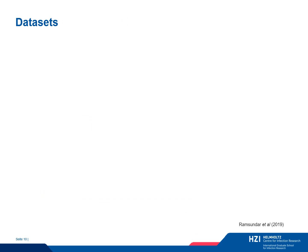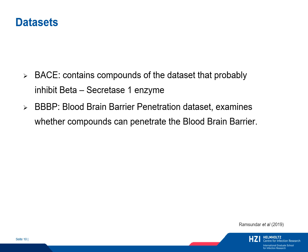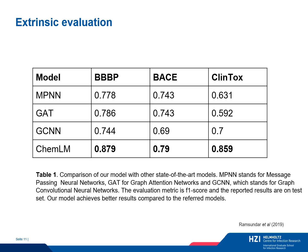We use three datasets to evaluate our approach. The first, BACE, has molecules that inhibit the enzyme beta-secretase-1. The second is a blood-brain barrier penetration dataset, which contains compounds that are able to penetrate this barrier. The last one, ClinTox, comprises toxic compounds and is the most imbalanced dataset we examine. We compare our model with other state-of-the-art approaches, specifically graph neural networks developed with the DeepChem library: message-passing neural network, graph attention network, and graph convolutional network.